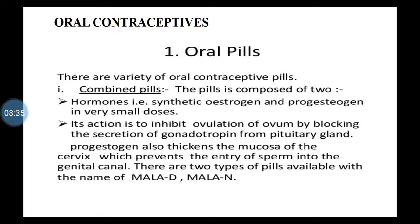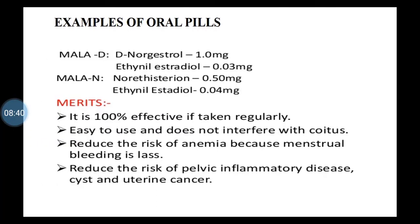Family welfare centers make available two preparations free of cost to eligible females: Mala-D and Mala-N. They contain synthetic derivatives of female sex hormones. Mala-D contains D-norgestrel 1 mg and ethinyl estradiol 0.03 mg. Mala-N contains norethisterone acetate and ethinyl estradiol. These pills are available in the market and are also supplied freely by the government.